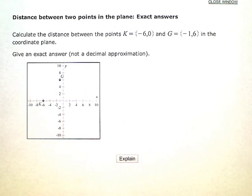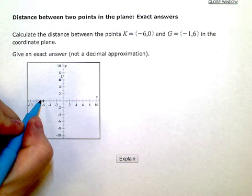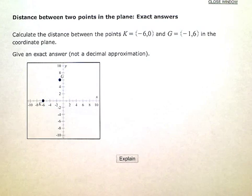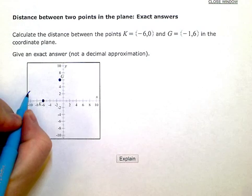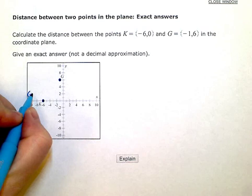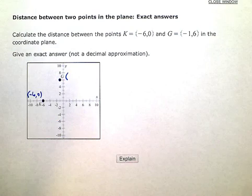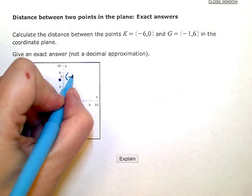We do have the graph here that we can use as a visual. There's my two points. The coordinates of K are at negative 6, 0, and the coordinates of G up here are negative 1, 6.